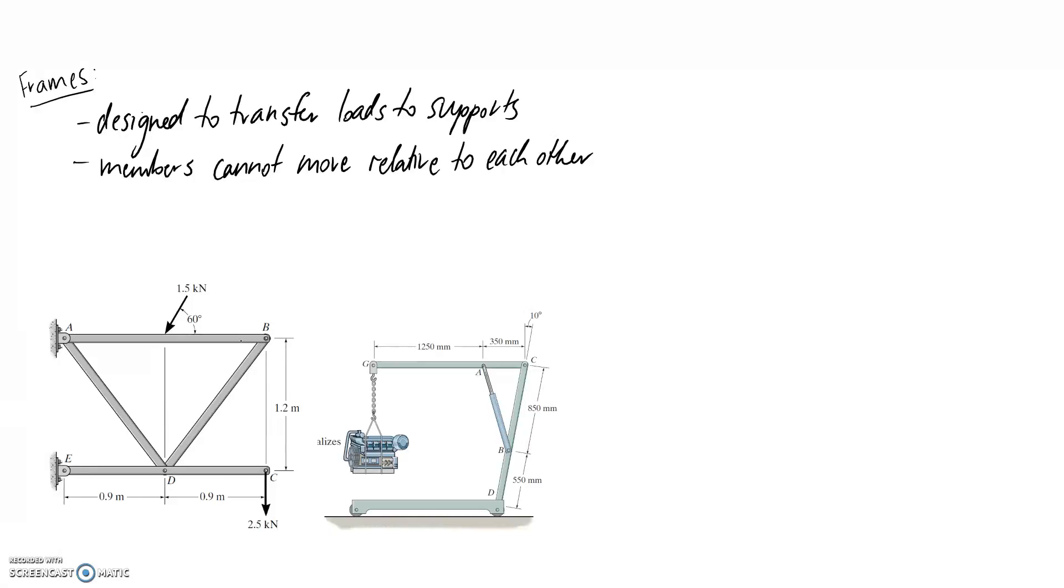And we can see that this force is basically going to have to be transferred from this member onto the support at the wall here, and this one as well onto the supports at the wall. Similarly, for this one here, we've got a weight hanging off the end of our frame, and we can see that this is going to have to have a load path all the way down to the supports against the ground.